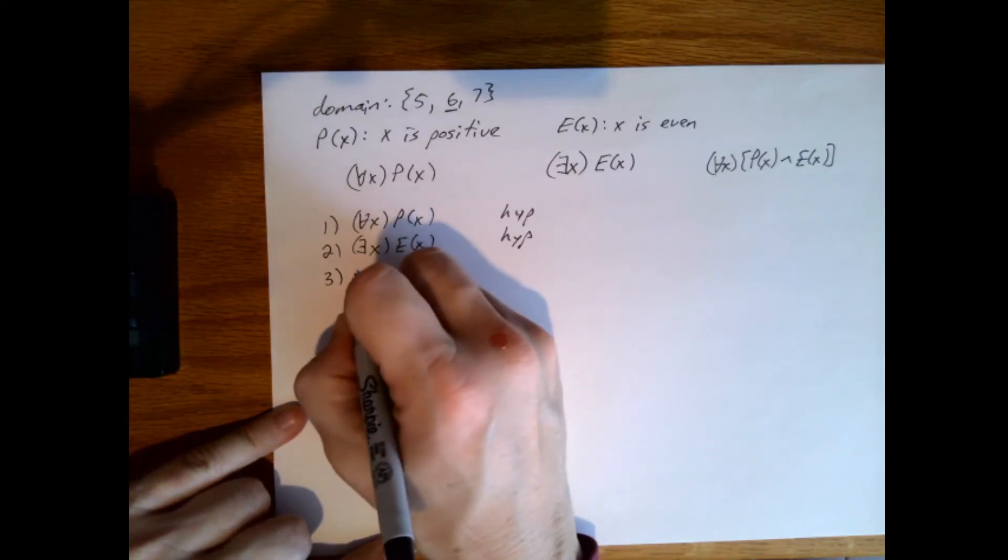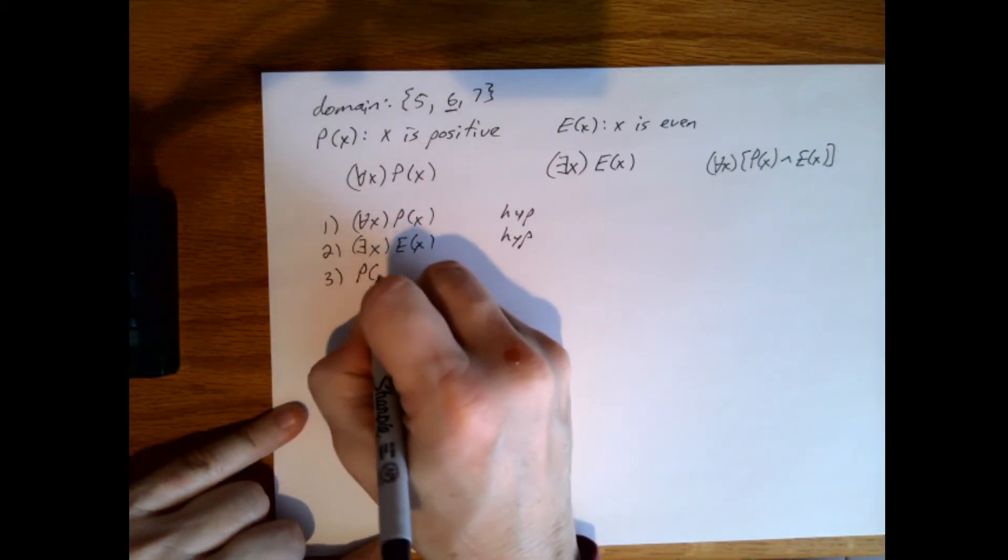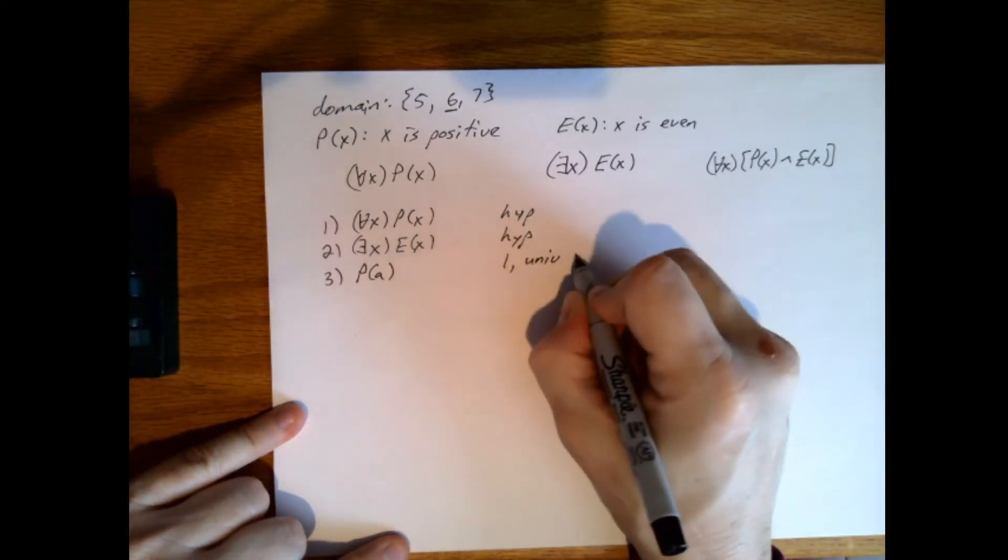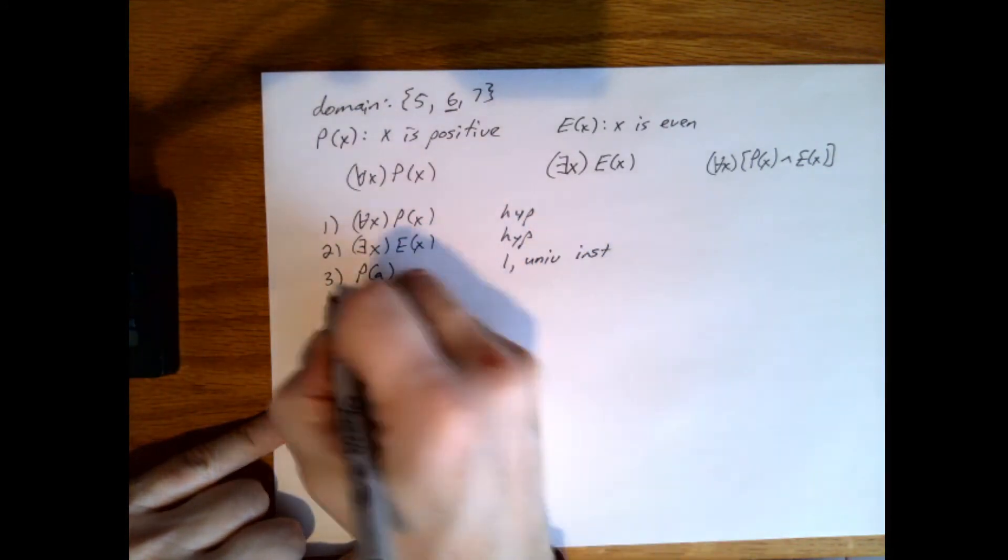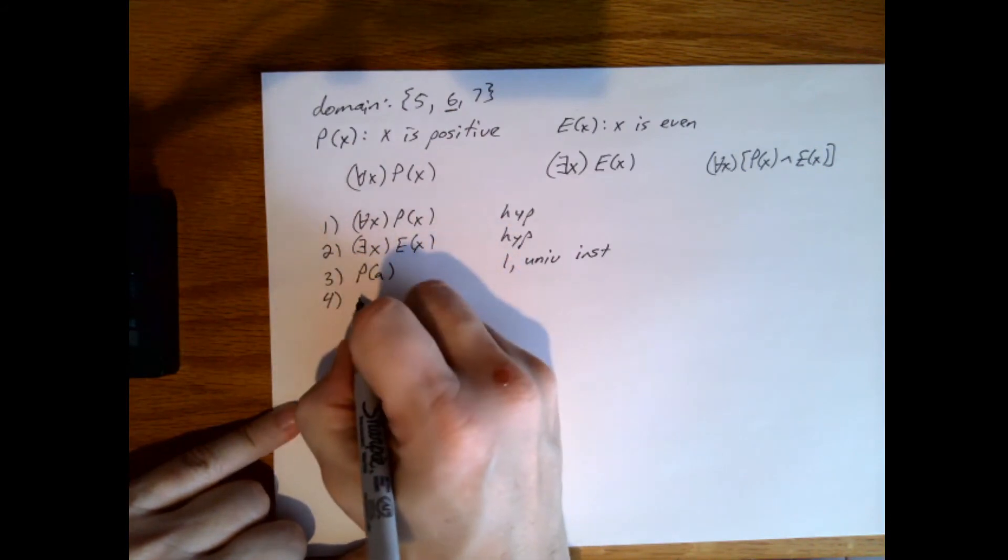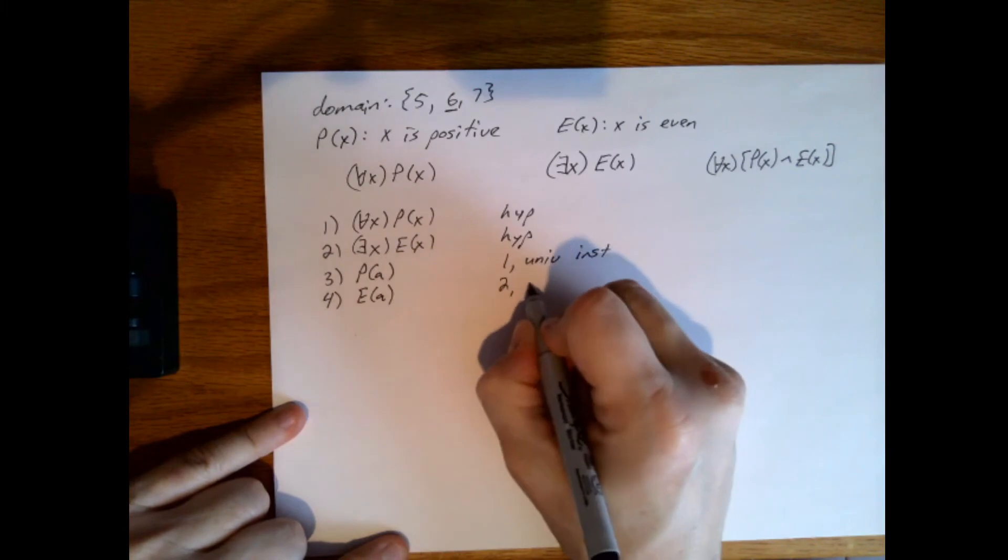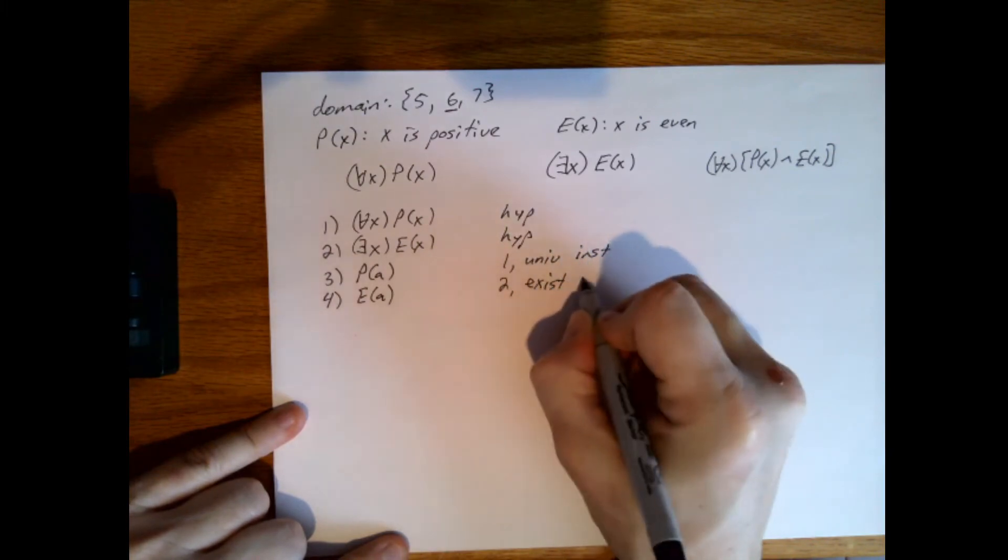And let's say we do this. We say, okay, P of A, so we did one, universal instantiation, and four, then I do E of A. That's two, existential instantiation.